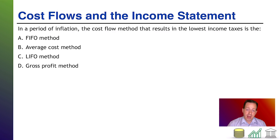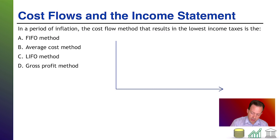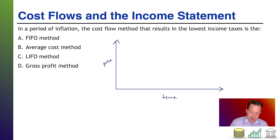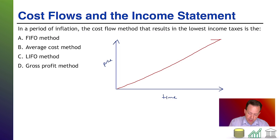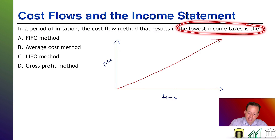Welcome back. The graph I'm referring to is from my lecture — price on the Y-axis and time on the X-axis. Since we are dealing with a period of inflation, we have an upward-sloping line. The question asks which method results in the lowest income taxes, which requires some income statement knowledge.